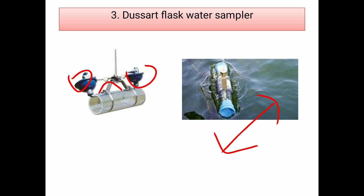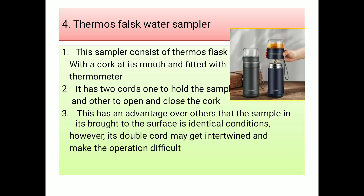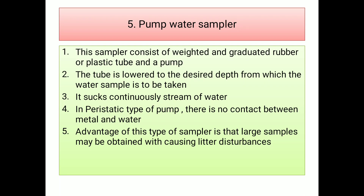The third one is the thermos flask water sampler. It is called so because it is made up of a thermos flask associated with a cork at its mouth and a thermometer to know the temperature. Two cords are used to open and close the cork. This sampler has an advantage over others in that it brings the sample to the surface in identical temperature conditions. However, the double cord system may cause disturbances and make operation more difficult.